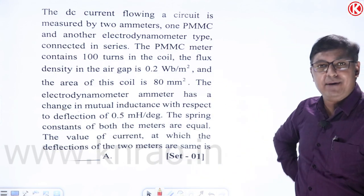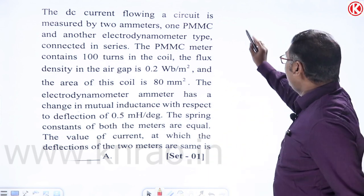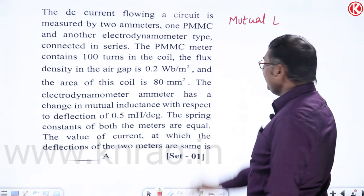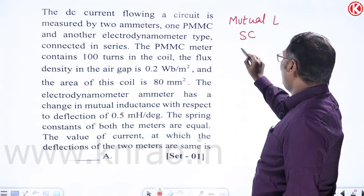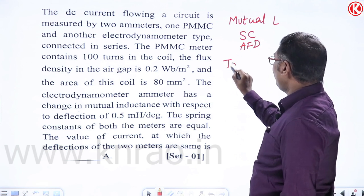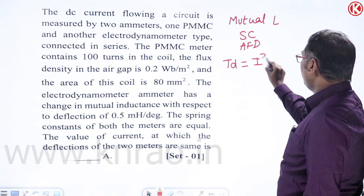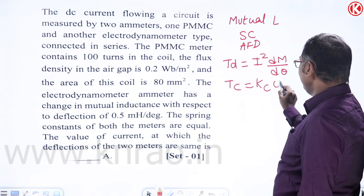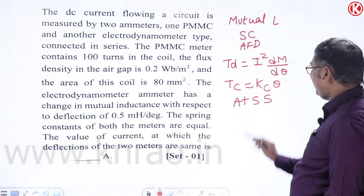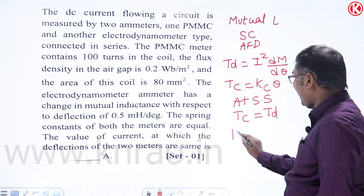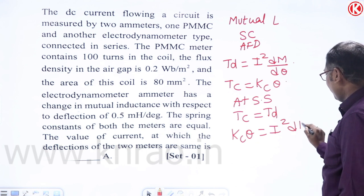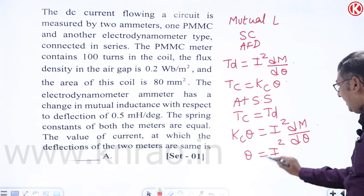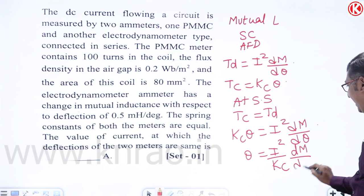EMMC (Electrodynamometer Moving Coil) instrument: working principle is mutual inductance between coils. Control is spring control; damping is air friction. Deflection torque: Td = i² dM/dθ. At steady state Tc = Td, so Kc·θ = i² dM/dθ, giving θ = (i²/Kc) · dM/dθ.